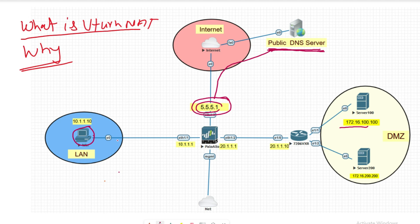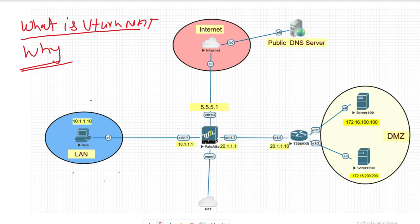So when this user tries to access a domain name, it will be resolved to the public IP address, and then that public IP address will be translated to the server's IP address. Let me explain the traffic flow path here.